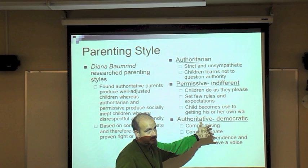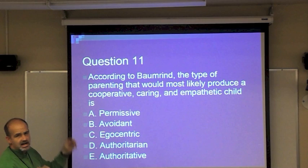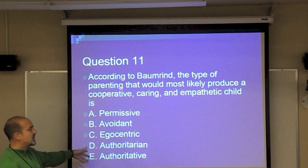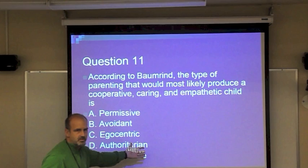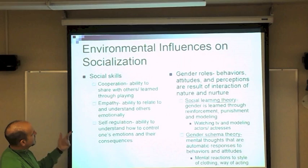Quiz: according to Baumrind, what parenting type most likely produces a cooperative, caring, empathetic child? Authoritative is the answer. A tip to avoid confusing authoritarian and authoritative: authoritarian is the strict 'barbarian'; authoritative — the T-I-V-E — is the most supportive.